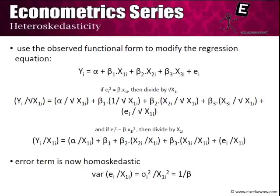This is called the weighted least squares method because by dividing by x1i or by the square root of x1i, we are giving weights to each sample in accordance with the value of x1i. If the value of x1i is high, we are deflating those samples, whereas if x1i is low, we are giving it more weightage. The original problem with OLS estimators was that they give equal weightage to all samples whether they have high or low variance. When using the weighted least squares method, we give more weightage to samples with low variance and less weightage to samples with higher variance, thereby remedying the heteroscedasticity problem.